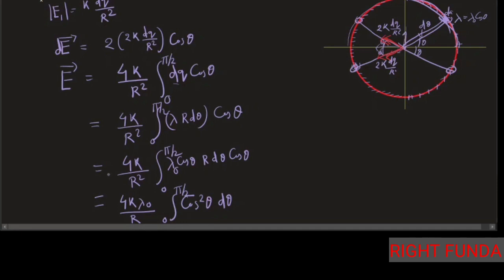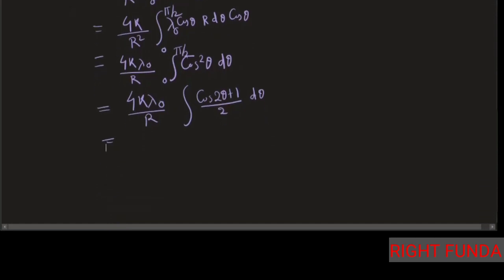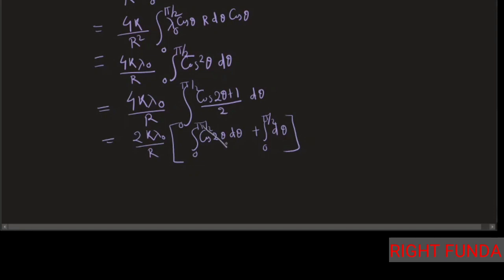We now integrate cos²θ by converting it using the double angle identity: cos²θ = (cos2θ + 1)/2. So E = 2kλ₀/r·∫₀^{π/2}(cos2θ + 1)dθ. Evaluating: the integral of cos2θ gives sin2θ/2, which evaluates to 0 at both limits, and the integral of dθ from 0 to π/2 gives π/2. Therefore E = 2kλ₀/r · π/2.